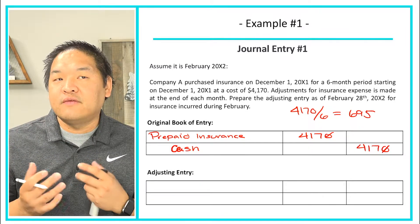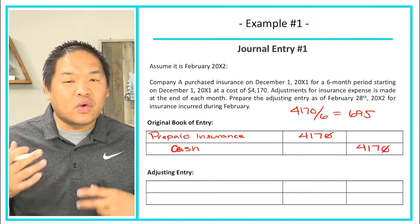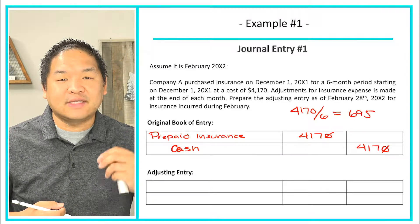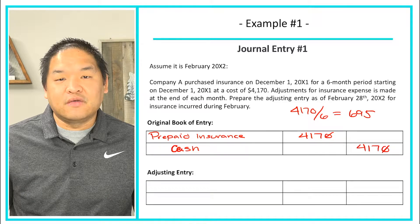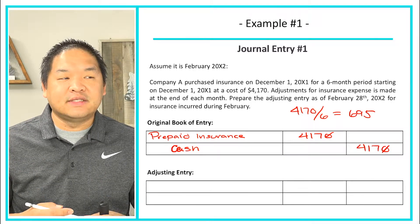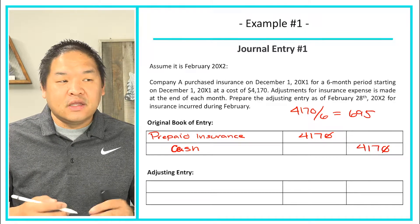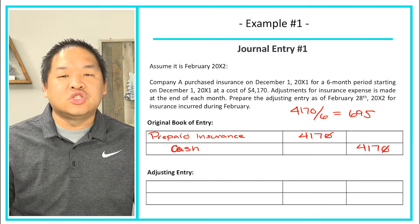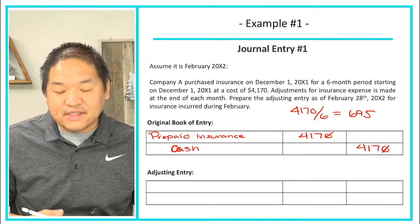Some might ask whether February being a short month matters. Materiality tells us that one or two days' difference isn't significant to the overall financial statement. Think of it this way: if you're a millionaire and you lose a hundred bucks, it probably doesn't matter. That's what materiality means — at what point is something insignificant? So we simply divide $4,170 by six to get $695 per month.